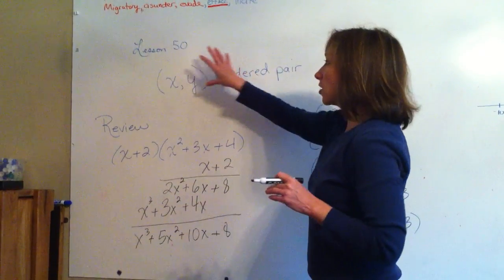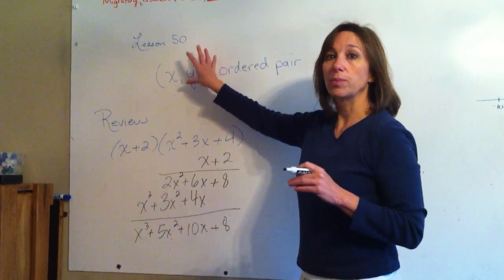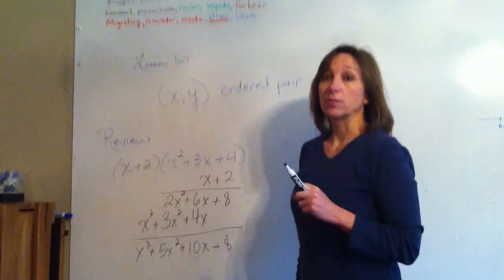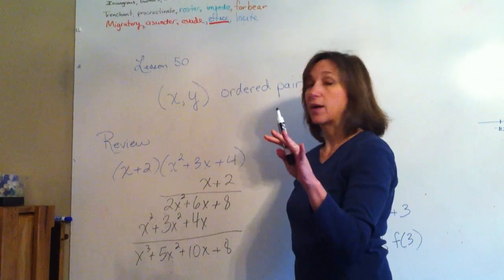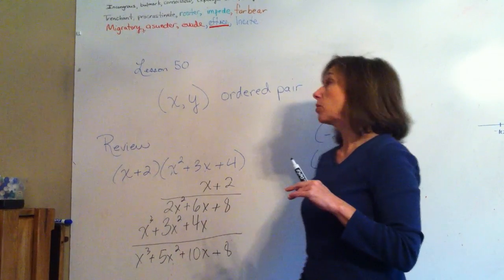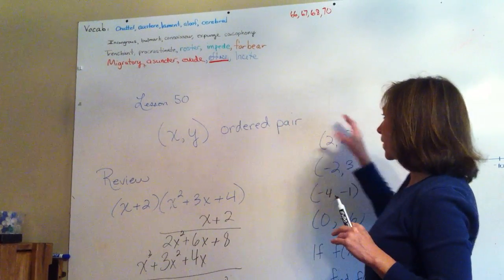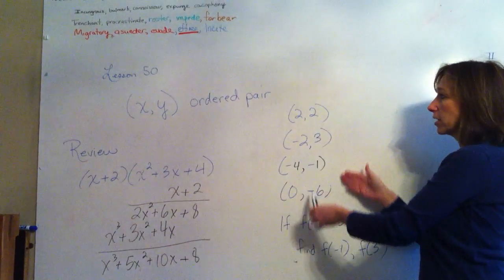So we're going to plot these things called ordered pairs. Ordered pairs are two numbers that satisfy an equation with two variables. But we're going to talk about all that when we start graphing. So we're going to take our ordered pairs, and this is what some ordered pairs look like.